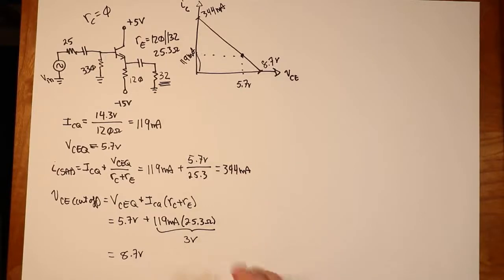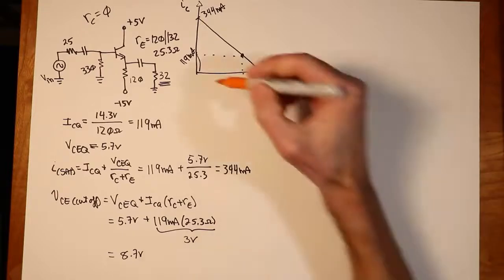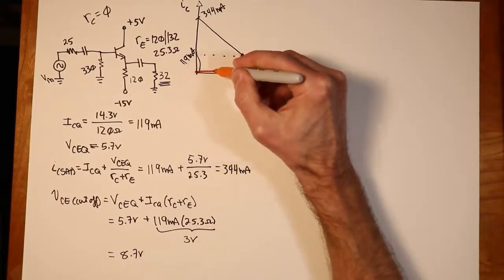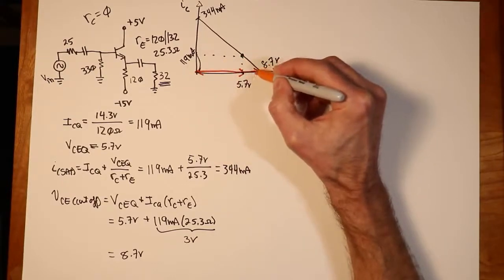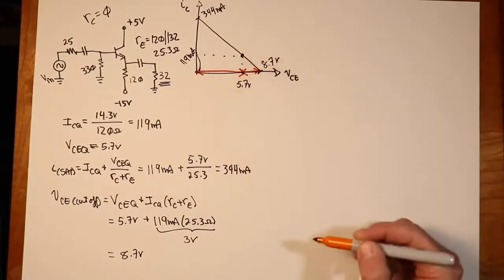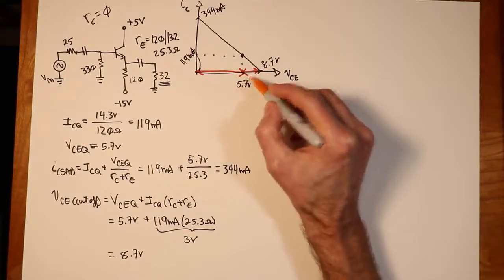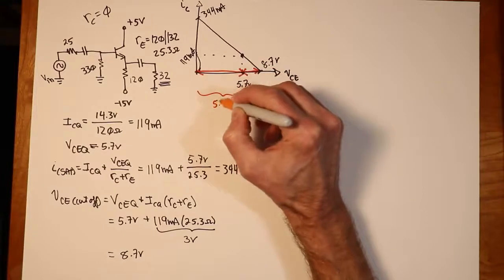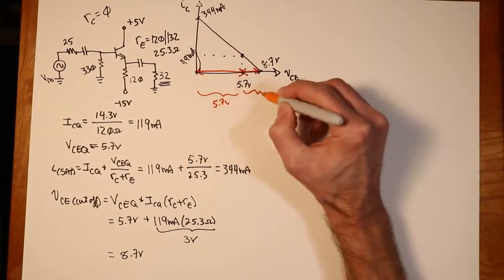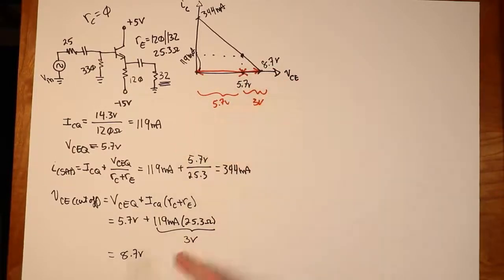Now remember what we have to do. To find the compliance, we look for the smaller of the two pieces. Which is the smaller? From saturation up to Q or cutoff to Q? Obviously, this is the smaller piece. So this was 5.7 volts. This piece was 3 volts, right? Which is why I left it like this down here.